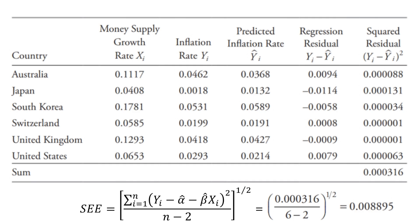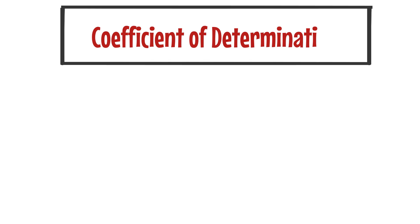Although the standard error of estimate gives us some indication of how certain we can be about a particular prediction of y using the regression equation, it still does not tell us how well the independent variable explains variation in the dependent variable. The coefficient of determination does exactly this.